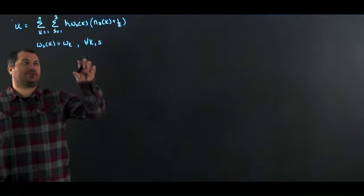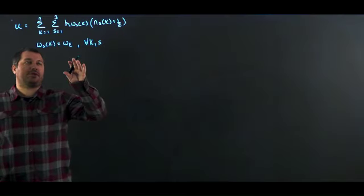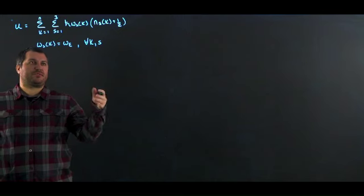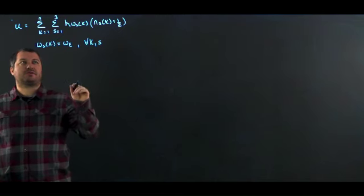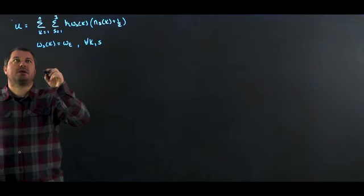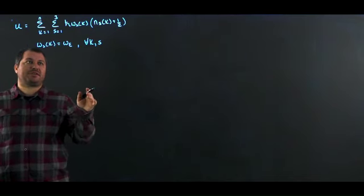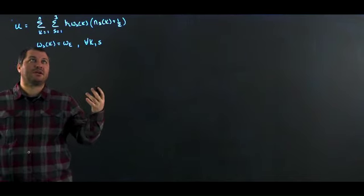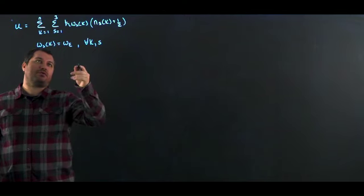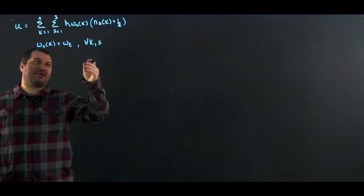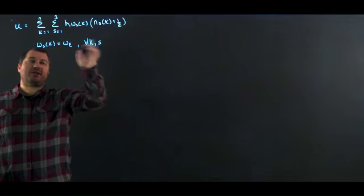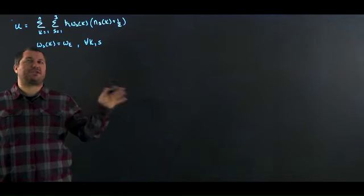We're now going to try another calculation of the specific heat — another approximation. The method here is called the Einstein method, or the Einstein interpolation. We're going to try to find the specific heat again. This time, instead of replacing omega as equal to Ck, we're actually going to say that omega_s(k) is equal to some constant omega — it's just constant.